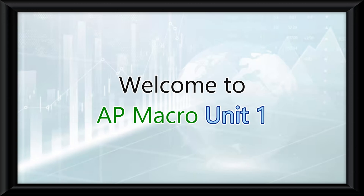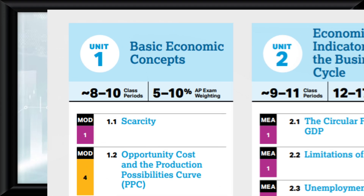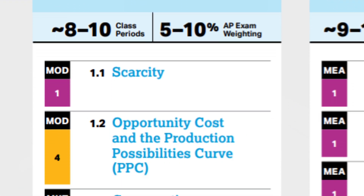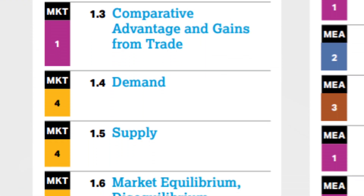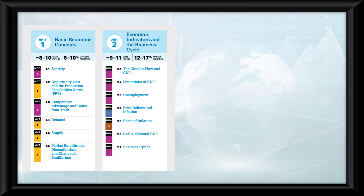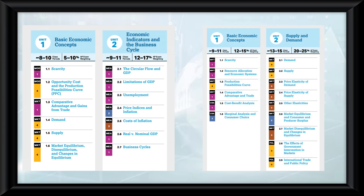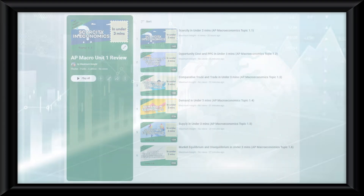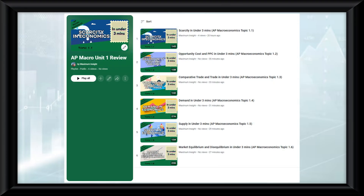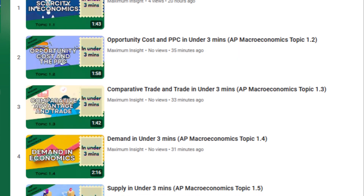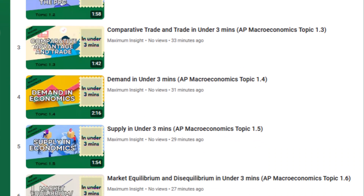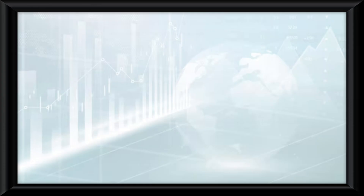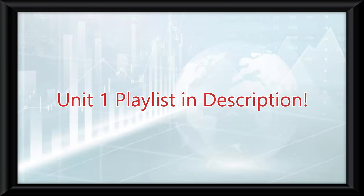Welcome to AP Macro Unit 1. This unit covers the foundational concepts of any economics course, which is why it's also coincidentally taught in AP Micro. This video is simply a clipped-together video of all my Unit 1 topic review videos without the AP style questions at the end of each video. If you'd like to try your hand at some AP style questions associated with each topic of Unit 1, the Unit 1 playlist is in the description.